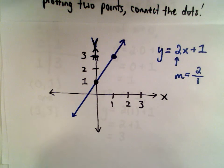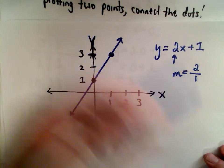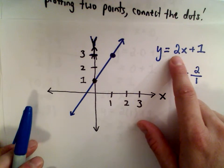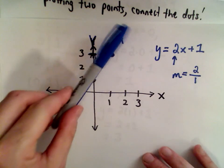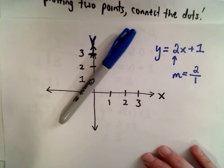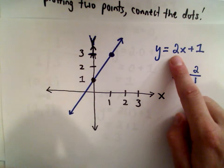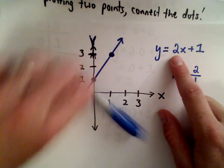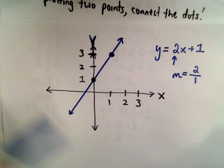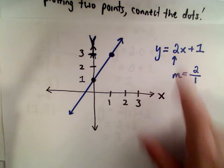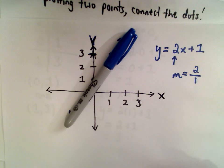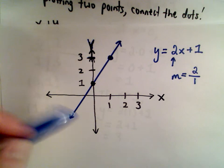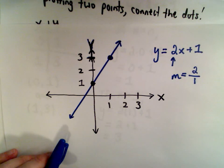So those are two different ways to graph the line. Also, if you're given a multiple choice question with a bunch of different lines, if the slope is positive the line will be increasing as you move left to right. If the slope were negative, say negative 2, it would be pointing down left to right. So since the slope is positive 2, you immediately know it has to be increasing, which can help you quickly eliminate some incorrect answers.